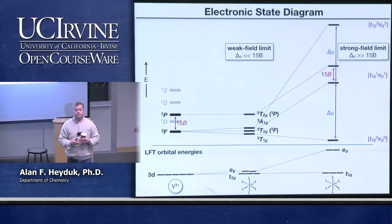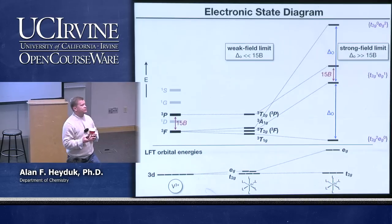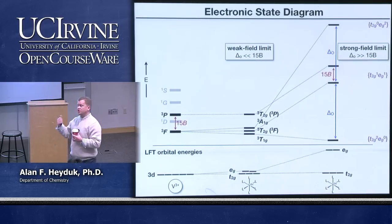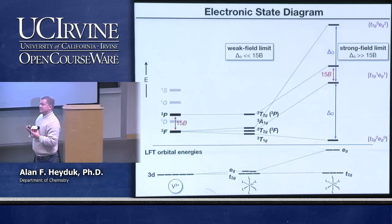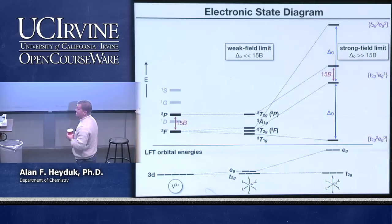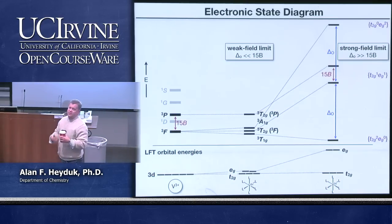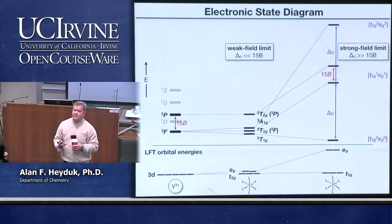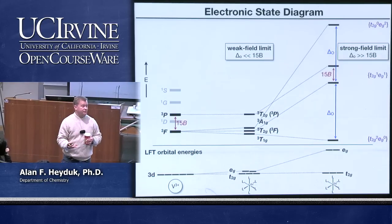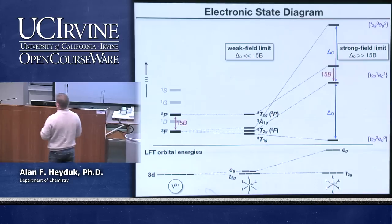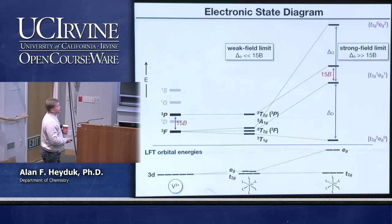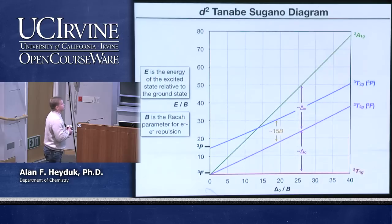It turns out that every D2 ion in an octahedral field will have an electronic state diagram that looks just like this. It doesn't matter what the metal is or what the ligands are — if it's a D2 ion in an octahedral field, it will look just like this. The only things that change are the magnitude of B — because it depends on the size of the metal — and delta O, the octahedral ligand field splitting, because that depends on both the metal ion and the nature of the ligand.